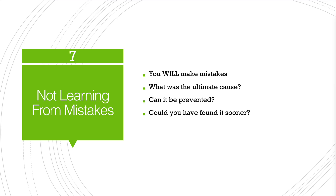Number seven is not learning from your mistakes. As a developer you're going to make a ton of mistakes — it's inevitable, and there's nothing wrong with that. There is a problem if you keep making the same mistakes over and over. The basic process I'd suggest: figure out the ultimate cause of the mistake, figure out if there's a process to prevent it from happening again, and figure out if catching it sooner could have prevented the consequences. If you think about these three things, chances are it won't happen again. Also, don't be too hard on yourself — it happens to the best of us.